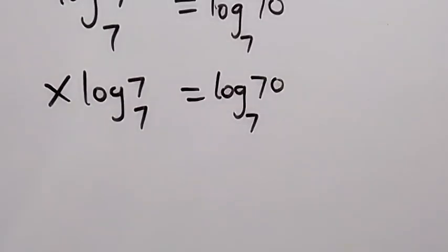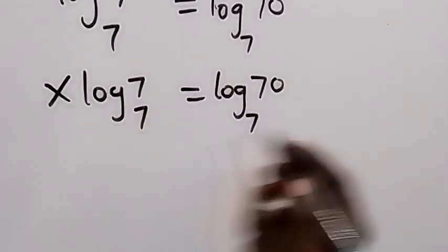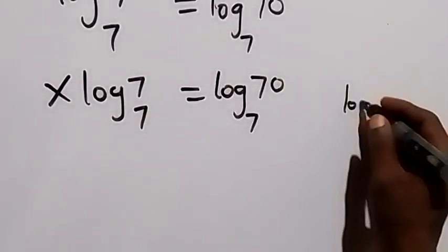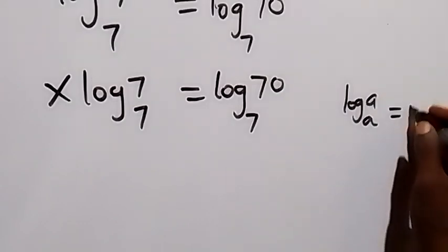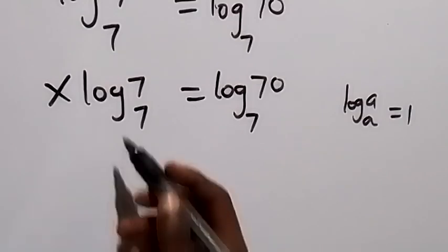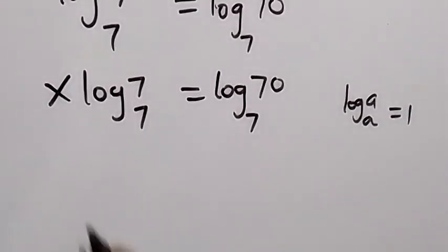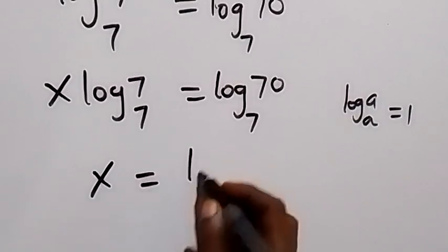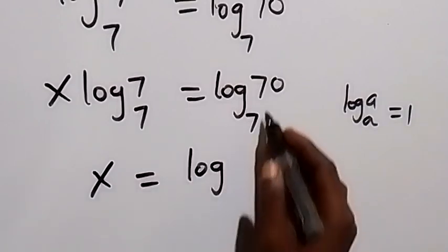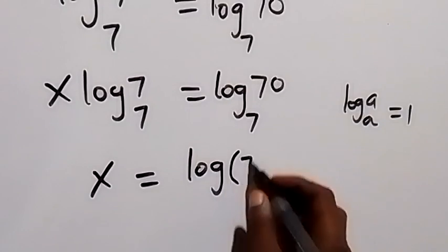And in the next step, we can apply the law of logarithm that when we have log a to base a, this will give us 1. So then log 7 to base 7 here is 1, 1 times x equals to we have log 70 can be expressed as 7 times 10, then base 7.